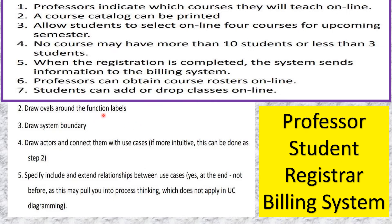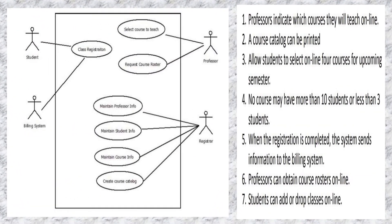After that, you draw ovals around the function labels, considering the system boundary. Then you draw your stick figures and label them with the actors. You may now draw the actors and specify their relationships with the use cases. Following all these steps — especially identifying use cases and actors — this would be our possible solution to the given scenario.